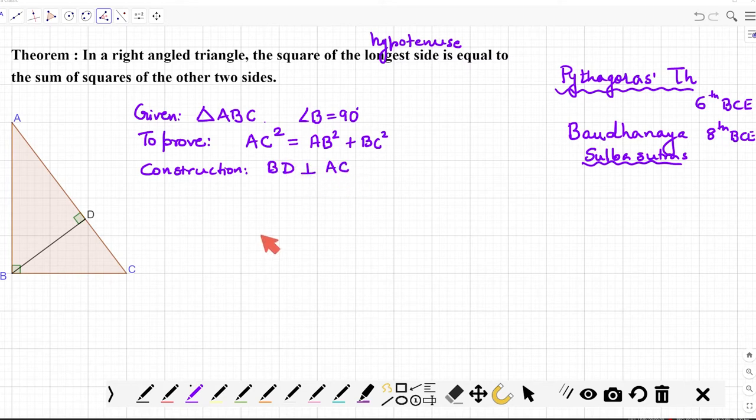So for that we need a construction. The construction is I have to drop a perpendicular BD onto the hypotenuse, that is AC. Now let us try to see or observe some similar triangles.